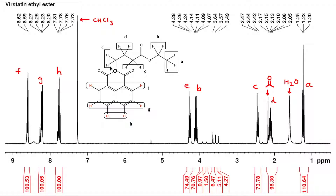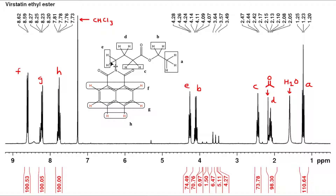The protons labeled E are next to a nitrogen and two carbonyls, creating a large deshielding effect, so we expect them more downfield. They also have two neighbors, so the E signal should be a triplet. The signal around 4.24 ppm is indeed a triplet, and its chemical shift matches the chemical environment of the E protons.